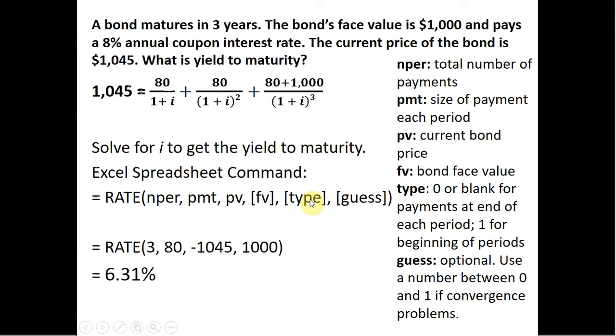I left the other things blank here, the type and guess. You don't have to put those in. And we get an answer of 6.31% as our yield to maturity. The 6.31% makes sense. The bond is selling above the face value because interest rates have fallen. There's an inverse relationship between bond prices and interest rates.